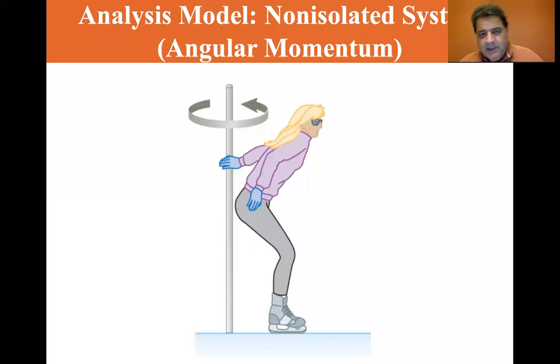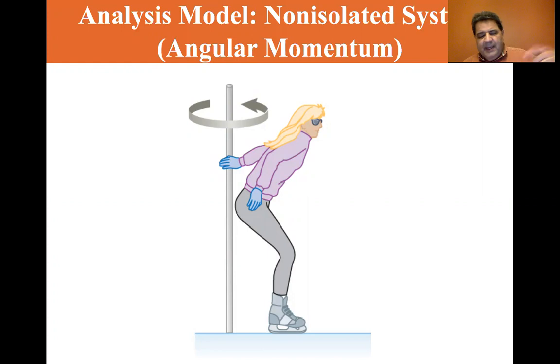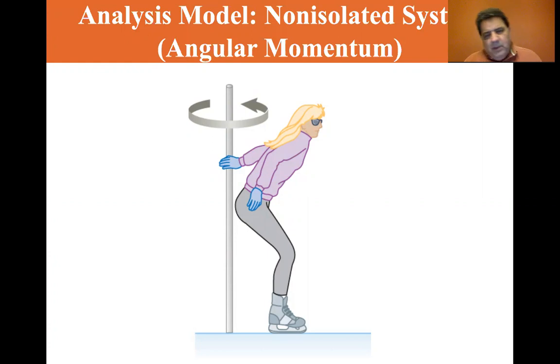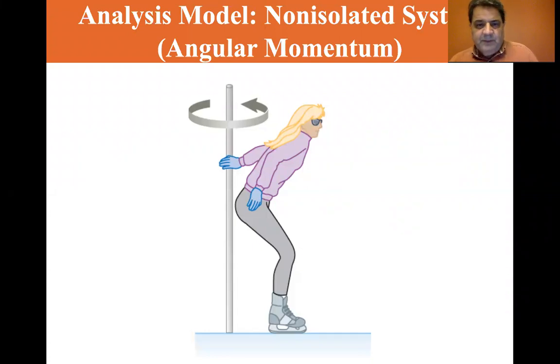We are at section 11-2, analysis model, non-isolated system — angular momentum of a non-isolated system. Let's look at the figure and imagine an ice skater headed towards the pole, not directly towards the pole, but offset a little bit. As she passes the pole, she reaches out her hand and starts going around the pole. She's turned her linear momentum — she had MV — into angular momentum. We're going to study the processes that go into converting her linear momentum to angular momentum.